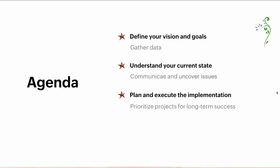Thirdly, now you know where you stand — it is the right time for you to move ahead to plan things and then execute the implementation in parallel. Any successful implementation is determined by how your team adopts the new process, and that's exactly when an implementation is said to be a success. In order to achieve it, you need KPIs — key performance indicators. We will give you a walkthrough of how to define all these things in this session.